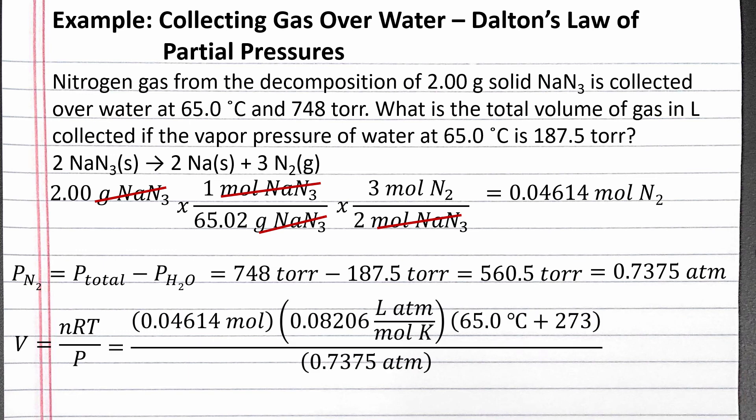When we plug in our values, we need to convert the temperature from degrees Celsius to Kelvin by adding 273. Completing the calculation, the volume of gas collected should be 1.74 liters.